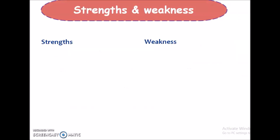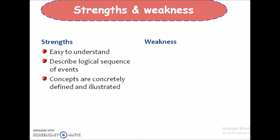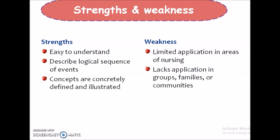Coming to the strengths and weaknesses of the theory. The strength is that it is very easy to understand and it describes a logical sequence of events. The concepts are concretely defined, identified and illustrated. The weakness is that the theory has limited application in areas of nursing, it lacks application in groups, families or communities, and it is concentrated on the dyadic relation — the relationship between two persons.